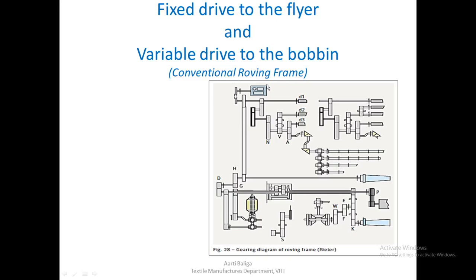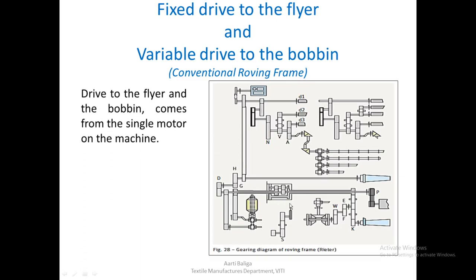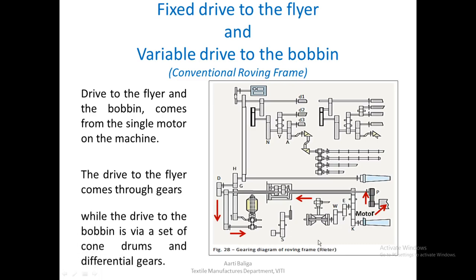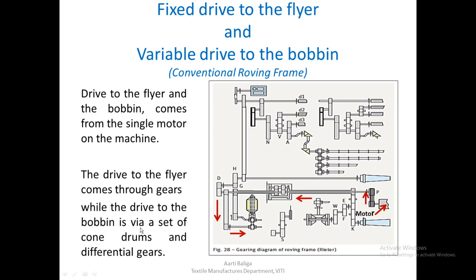The flyer has a fixed drive because it runs at constant speed from the start to the end of the bobbin, and the bobbin receives a variable drive. On a conventional roving frame, drive to both the flyer and the bobbin comes from a single motor. The flyer drive comes through a normal set of gears, while the variable drive to the bobbin comes via a set of cone drums and differential gears.